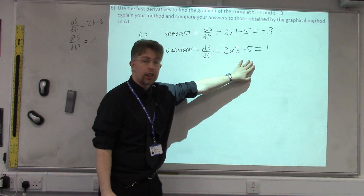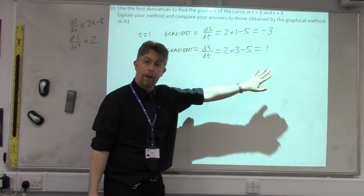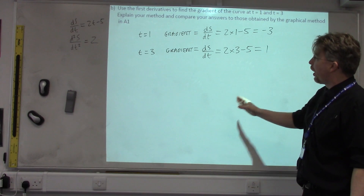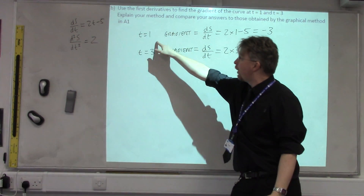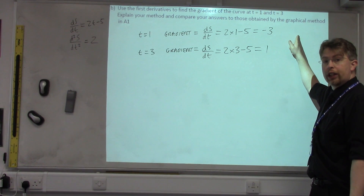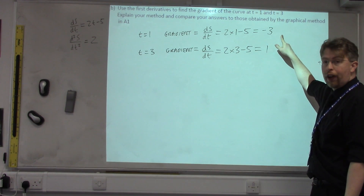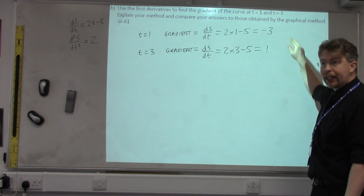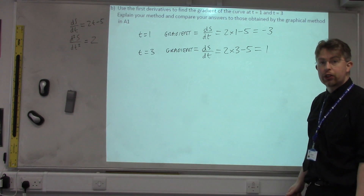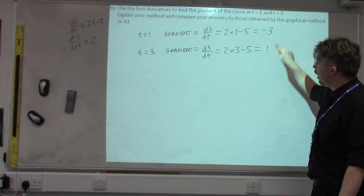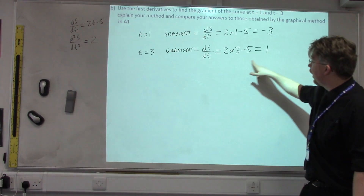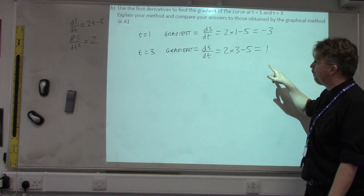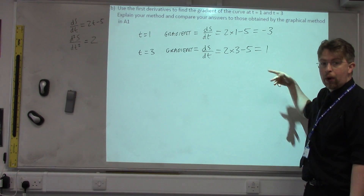These answers are the precise, mathematically exact gradients. For a pass mark we need at least these results, but for Merit or Distinction we need to explain the method and compare to the graphical answers from A1. If your answer for the gradient at t equals 1 was close to minus 3, it was a good estimate; if it was far away, say minus 7, it was a bad estimate. Similarly for t equals 3: if your graphical gradient was close to 1, it was a good estimate; if far away, it was a bad estimate.